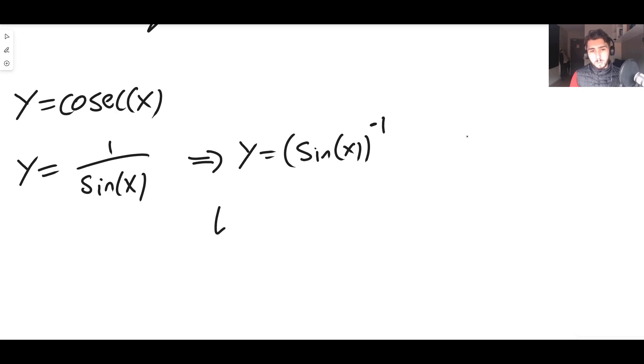I can then use the chain rule and say let u equal sin(x). You might be able to do this in your head, but I'm going to do it like this. If u is sin(x), that means that first of all, du/dx is going to be cos(x) because sine differentiates to cos.